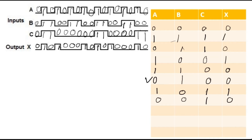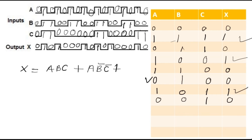If you want to directly derive the expression, look at where X is 1. X=1 for: A=1,B=1,C=1 giving term ABC; A=1,B=0,C=0 giving term AB̄C̄; and A=1,B=0,C=1 giving term AB̄C. So the SOP expression is X = ABC + AB̄C̄ + AB̄C. You can simplify this using Boolean algebra, but the best way is to use a K-map.